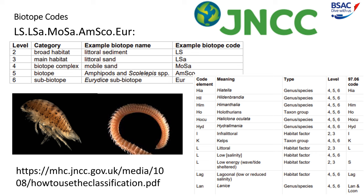Level 5 is where we start to talk about taxonomy and classification of the creatures themselves — it is the biotope. This is indicating that it is an amphipod or a polychaete worm, effectively a bristle worm. And you've also then got the sub-biotope, which is the Eurydice — effectively a sea louse. So that's how we break down biotope codes.